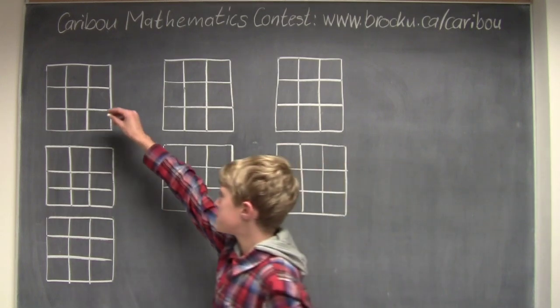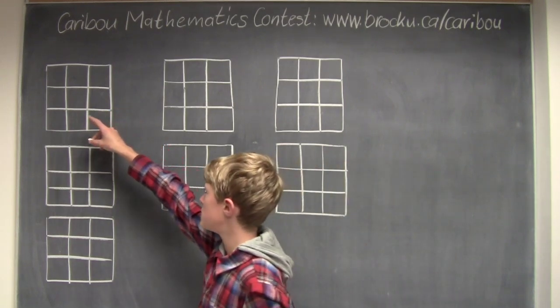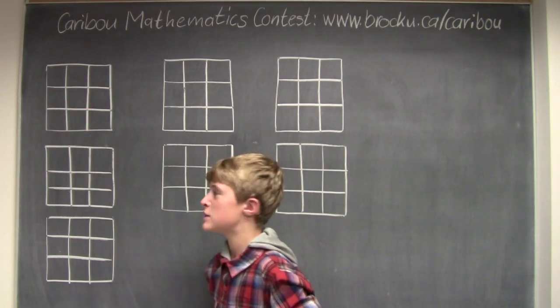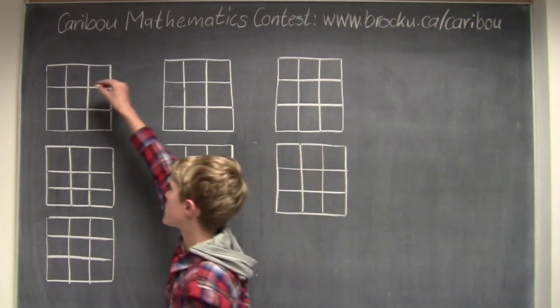Okay, there's a 3 times 3 grid with digits 1, 2, and 3 so that each digit appears once in each row and column. The question is, how many ways can you fill up the grid?